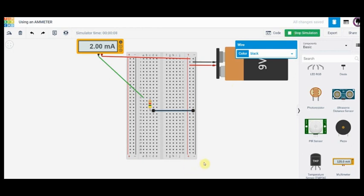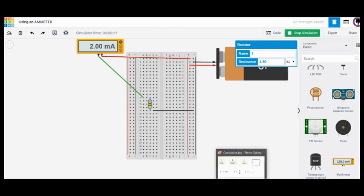Let's go and take a look at the calculation. So remember I have a 9 volt battery and my resistor here is 4.5 kilo ohms. So let's just go in and look at this calculation.